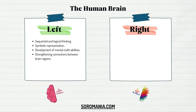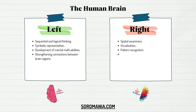The Soroban method also captures the involvement of the right hemisphere of the brain. While the left hemisphere is tied to analytical thinking and language processing, the right hemisphere is typically associated with spatial awareness, creativity, and intuition. The Soroban method effectively nurtures the right hemisphere through spatial awareness, visualization, pattern recognition, and integration of both hemispheres.